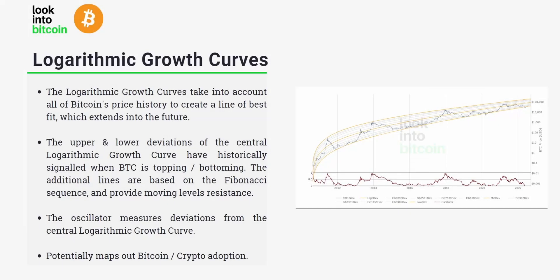Just to summarise: the logarithmic growth curves take into account all of Bitcoin's price history to create a line of best fit which extends far into the future. The upper and lower deviations of the central logarithmic growth curve have historically signaled when Bitcoin is topping or bottoming. The additional lines are based on the Fibonacci sequence and provide moving levels of resistance or support and general areas of retail interest. The oscillator within this chart also measures deviations from the central logarithmic growth curve, so with a quick and easy look at the oscillator you can see where we are in relation to the central line, which some may consider Bitcoin's fair value. What this tool also does is potentially map out Bitcoin and cryptocurrencies' adoption and general growth as an asset class — we may only get a few more cycles where Bitcoin is in its adoption and growth stage before the asset class matures and becomes similar to traditional asset classes we see today.